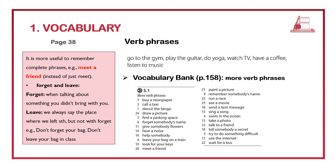Number 6: leave your bag on a train. Number 19: look for your keys. Number 20: meet a friend. Number 21: paint a picture. Number 9: remember somebody's name. Number 23: run a race. Number 25: see a movie. Number 18: send a text message. Number 13: sing a song. Number 4: swim in the ocean. Number 15: take a photo. Number 12: talk to a friend. Number 10: tell somebody a secret. Number 5: try to do something difficult. Number 17: use the internet. Number 22: wait for a bus. To improve your pronunciation, you can listen to me or track 5.1 again and repeat each phrase out loud.